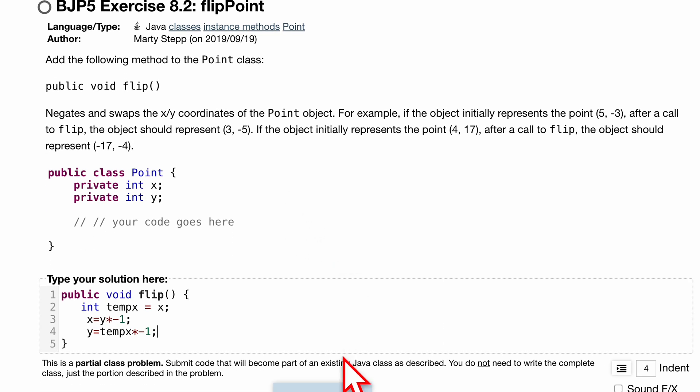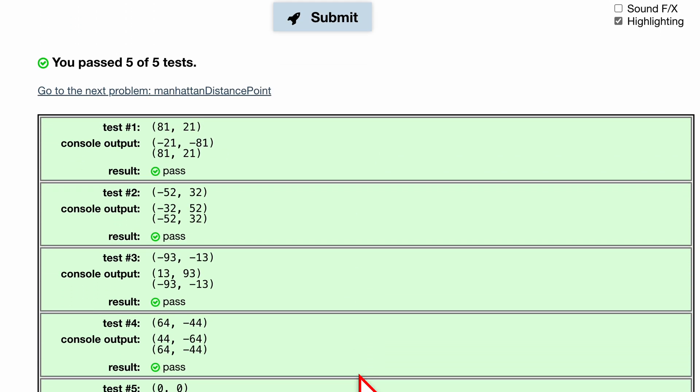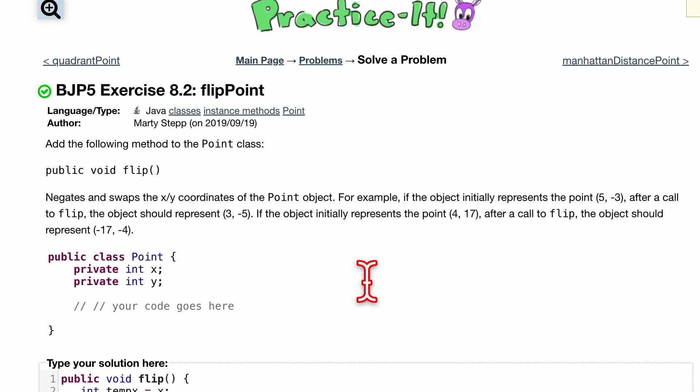And that's pretty much it for our flip method. Let's press submit—it's going to contact the server and run our tests. We passed five out of five tests! Good job, everyone. That's how we code this problem: Exercise 8.2, FlipPoint.